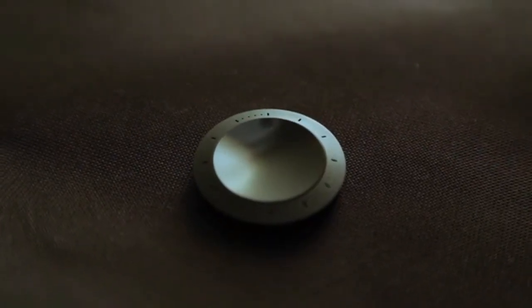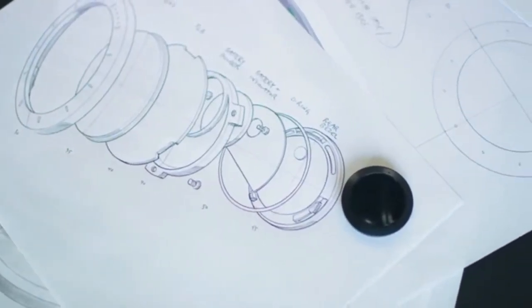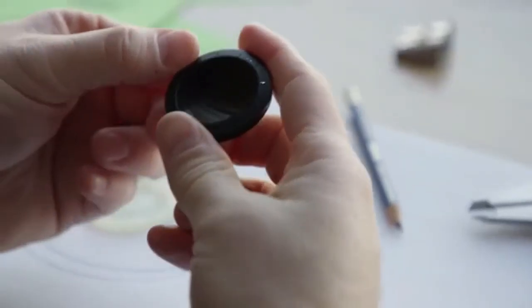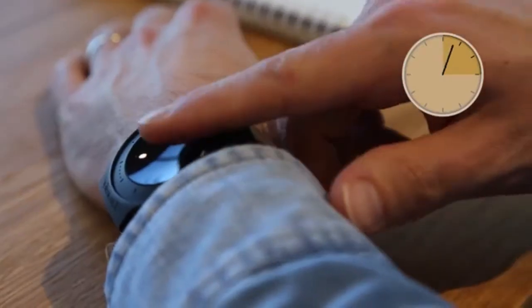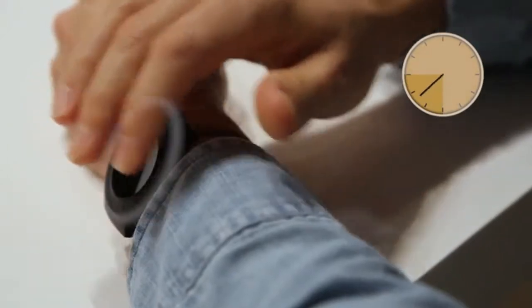Smooth to the touch, the concave coin cradles your thumb. Touching it triggers haptic feedback: one pulse for the first 15 minutes, two pulses for the second, three for the third, four vibrations for the last 15 minutes.